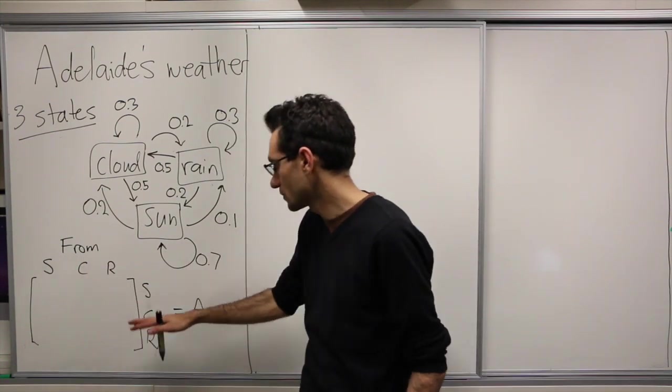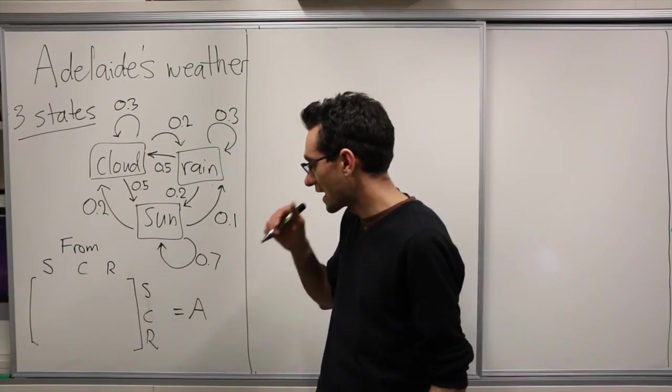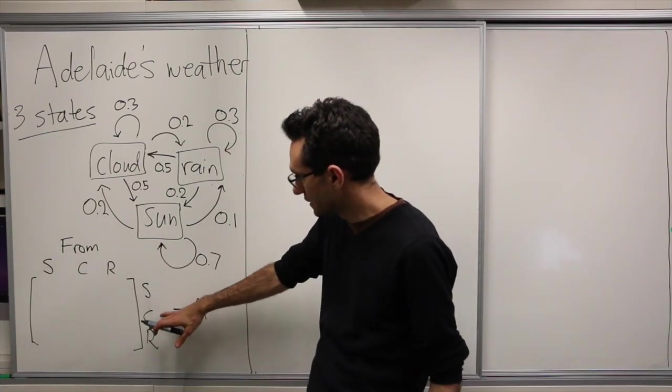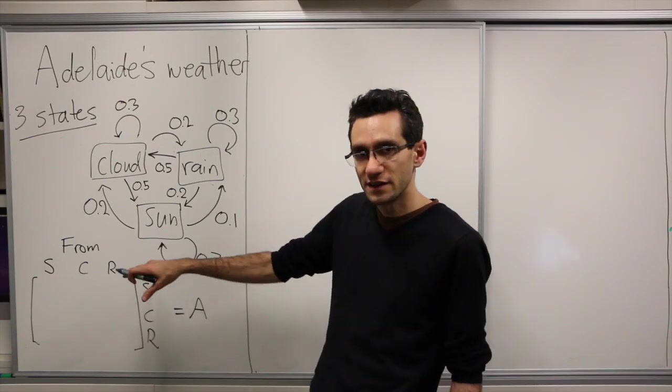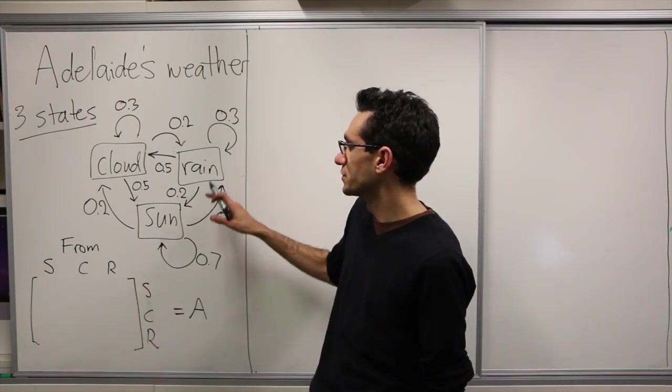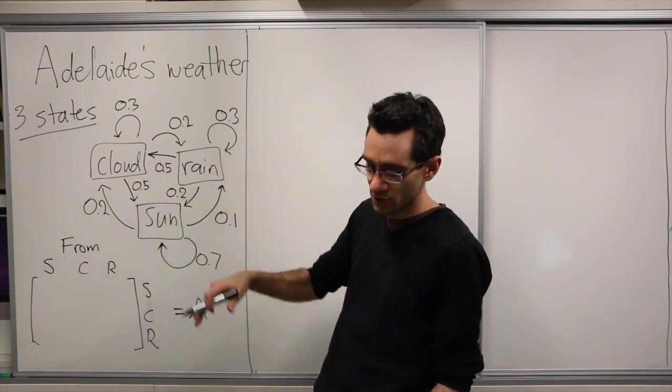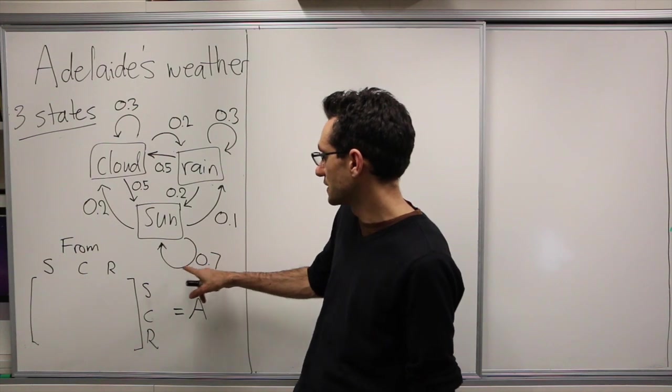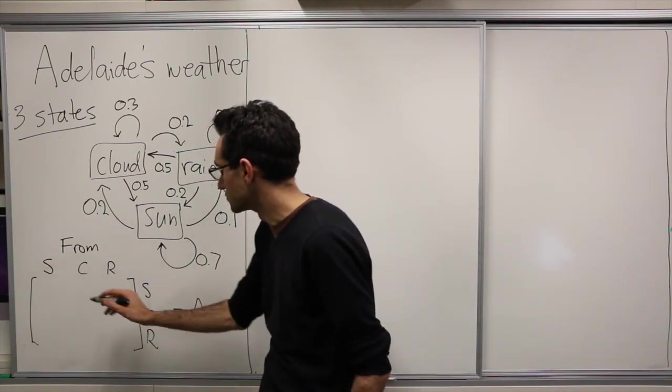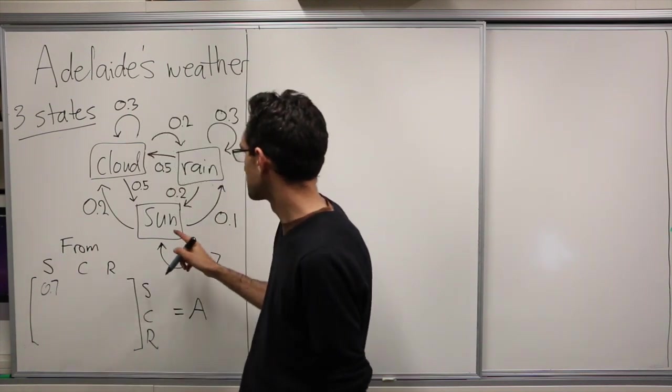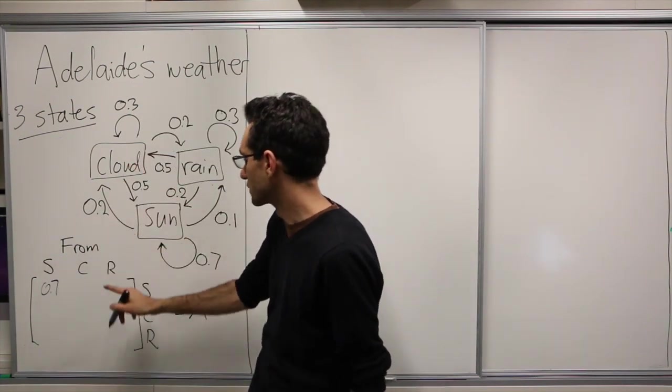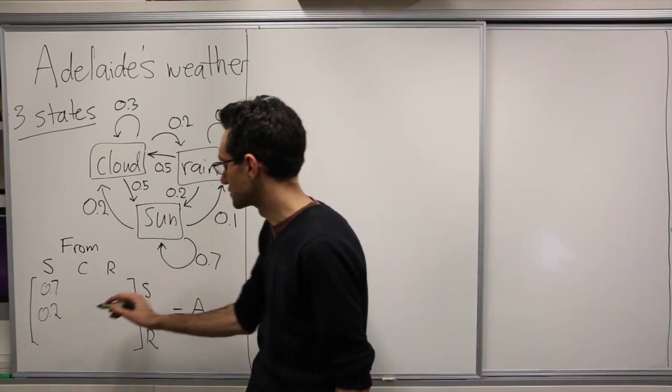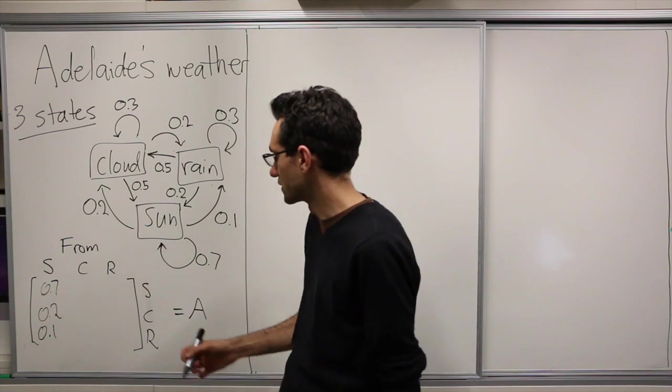So I've got here my transition matrix and I've just labeled the columns sunny, cloudy, raining, and the rows sunny, cloudy, raining in the same order. And I can fill in now the stochastic matrix with the probabilities given by the diagram which also are detailed in the outline of the problem. So the probability to move from sunny to sunny is 0.7, from sunny to cloudy is 0.2, and sunny to rain is 0.1. And likewise I can just fill in the rest of the matrix.